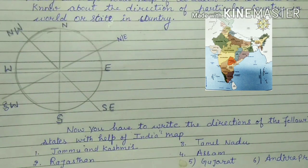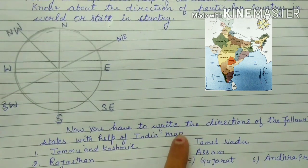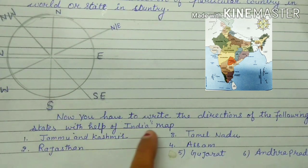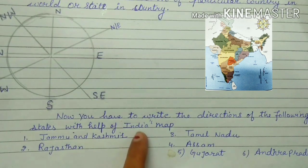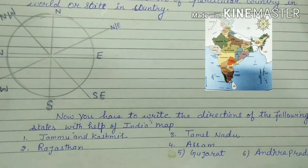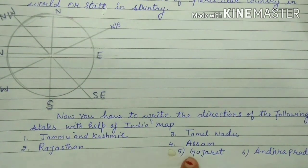Now I think you are able to find the direction of a particular state and a particular country in the world. I am giving you one question for homework: you have to write the direction of the following states using India's map. Find out which direction Jammu and Kashmir is situated in. If it is at the top it is north; if it is in between, write north-east. Write the direction of each state in your notebook.